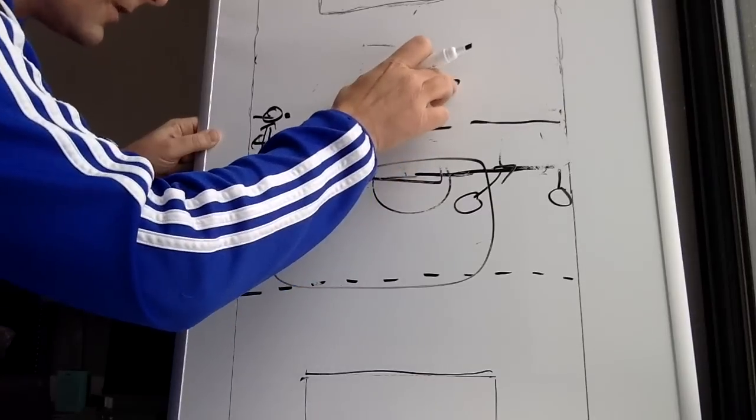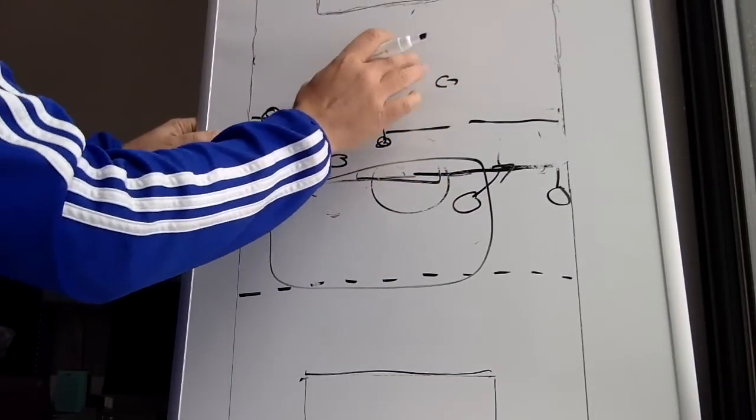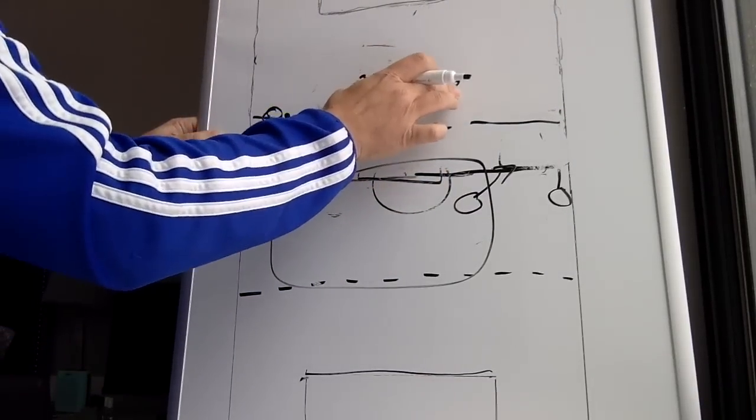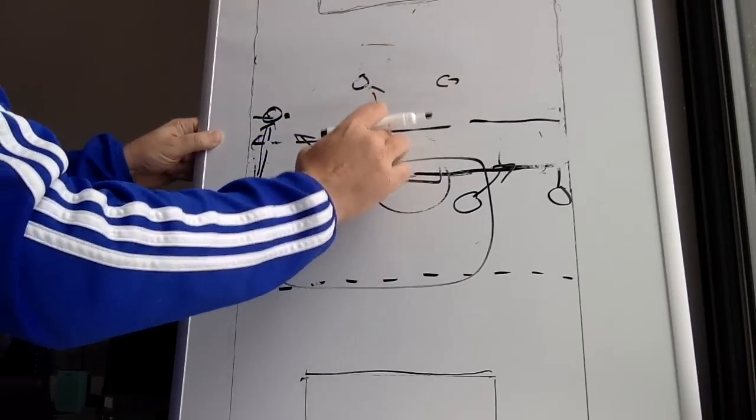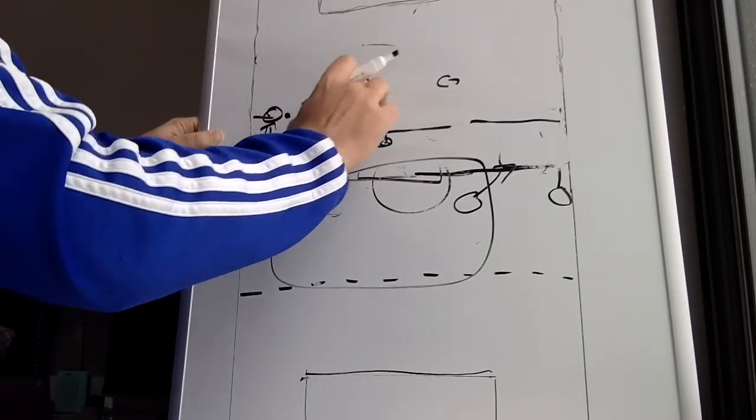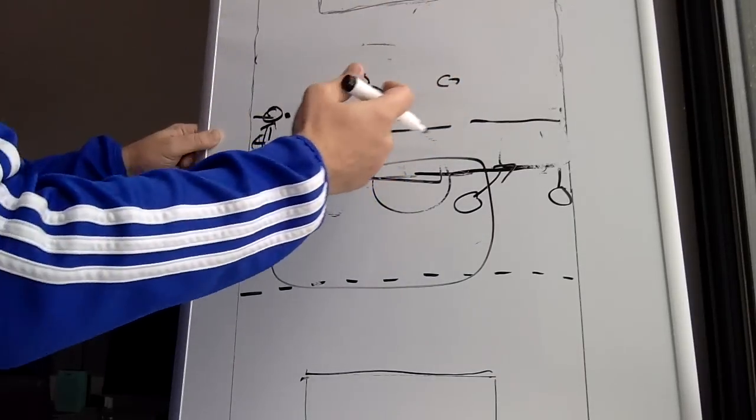You're going in threes. You could go in twos to press the center backs. You could have different strategies to press. Maybe it's two forwards pressing both center backs. Maybe it's one forward pressing, one forward dropping. Maybe one forward pressing the ball in here as the other forward is high looking for the counter attack. You never know.